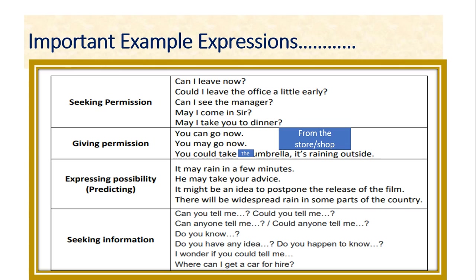Now let's move on to expressing possibility. 'It may rain in a few minutes.' 'You may take your advice.' 'It might be an idea to postpone the release of the pills.' These sentences are predicting or expressing possibility. For seeking information: 'Can you tell me?', 'Could you tell me where the post office is?', 'Could you tell me where the bus station is?' - these come under polite request when you ask a stranger to locate a place.